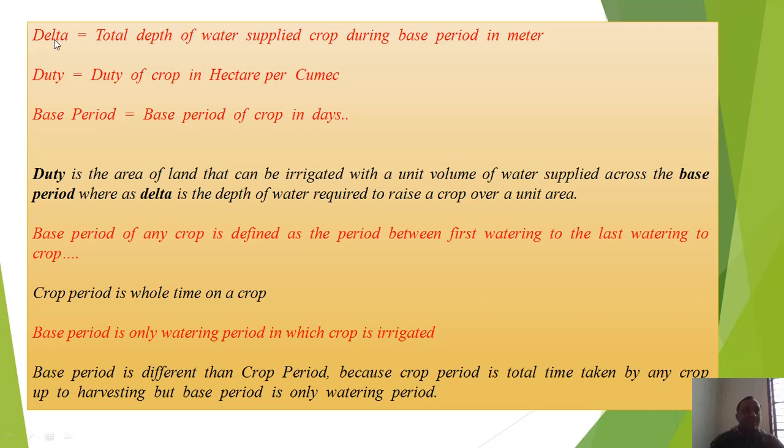First, delta: the total depth of water supplied to the crop during base period, measured in meters. Duty: duty of crop is in hectare per cumec. Base period of crop is in days.